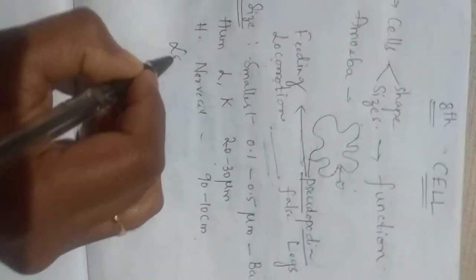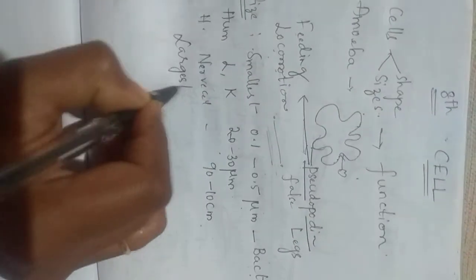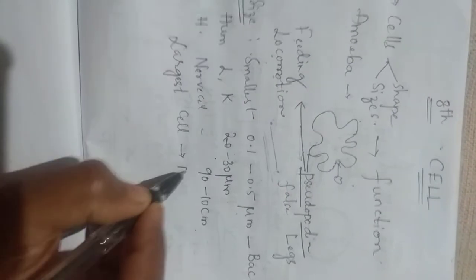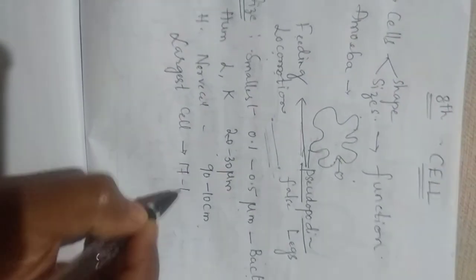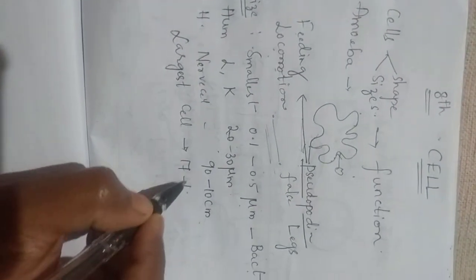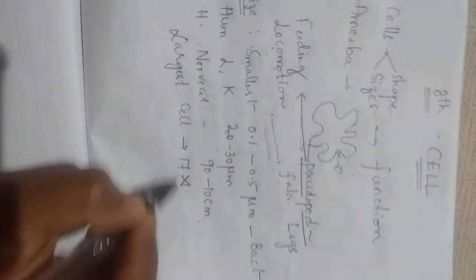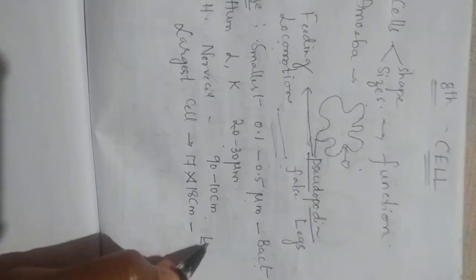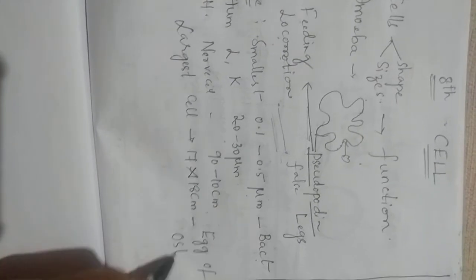And the largest cell — nerve cell से भी बड़ी — 17 by 18 centimetres की होती है. यह egg of ostrich में रहती है.